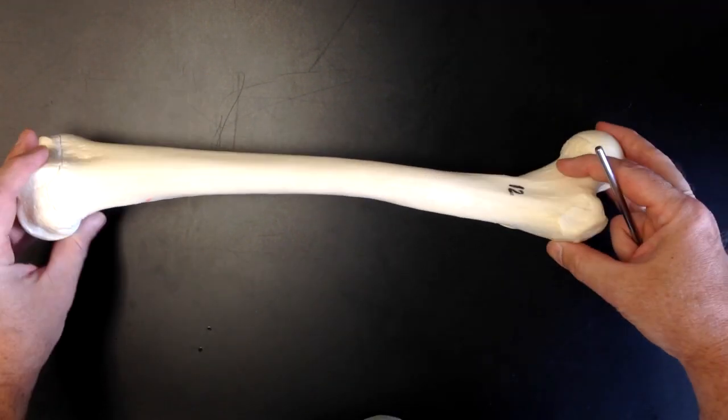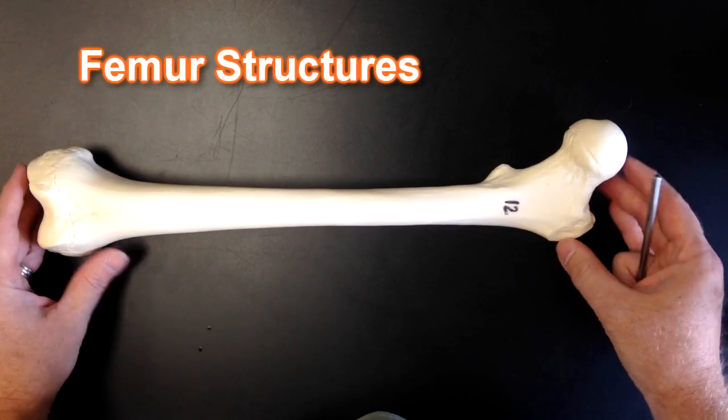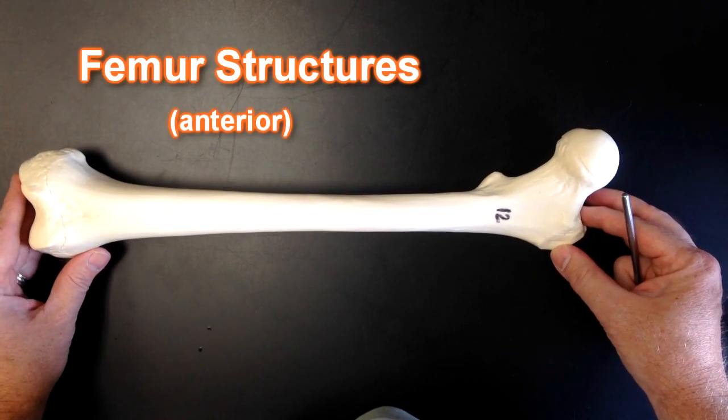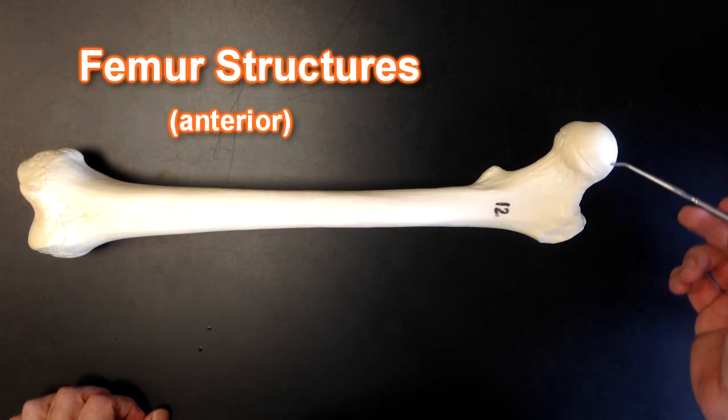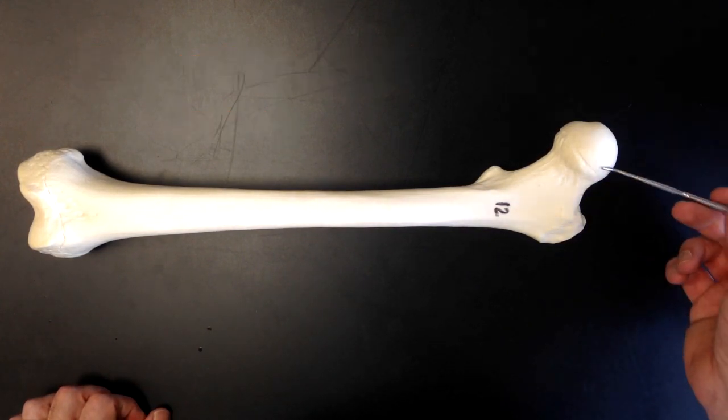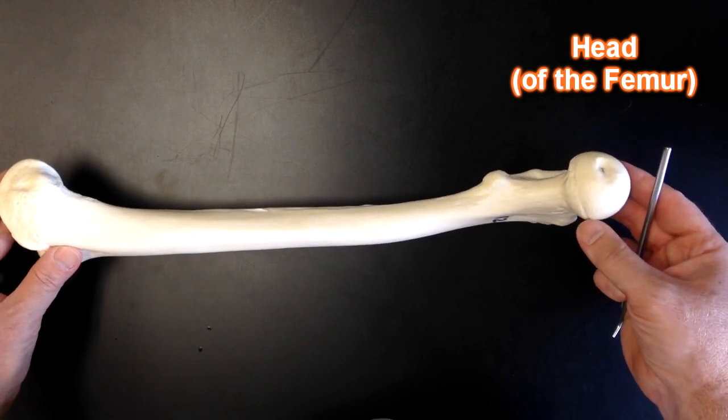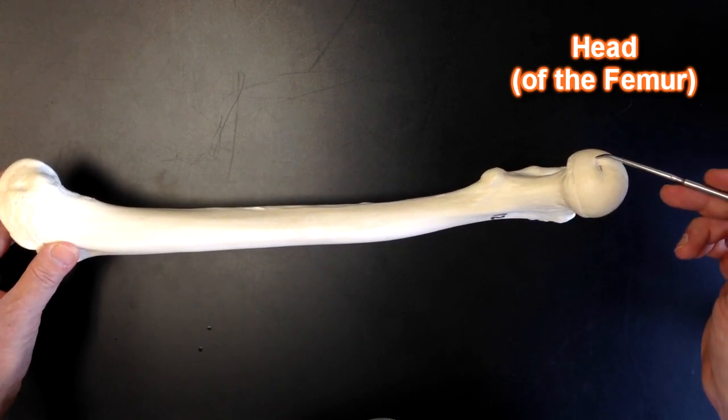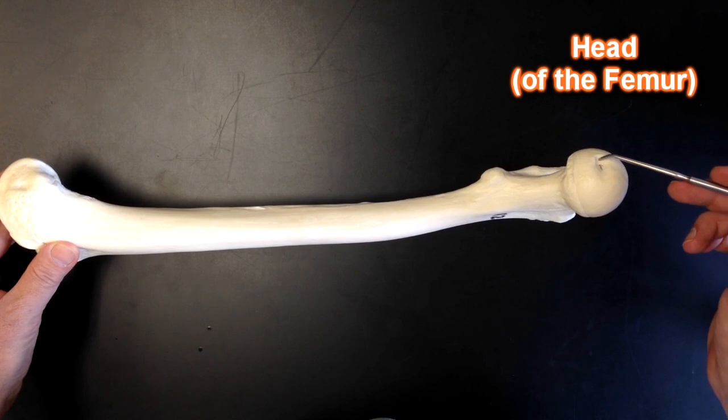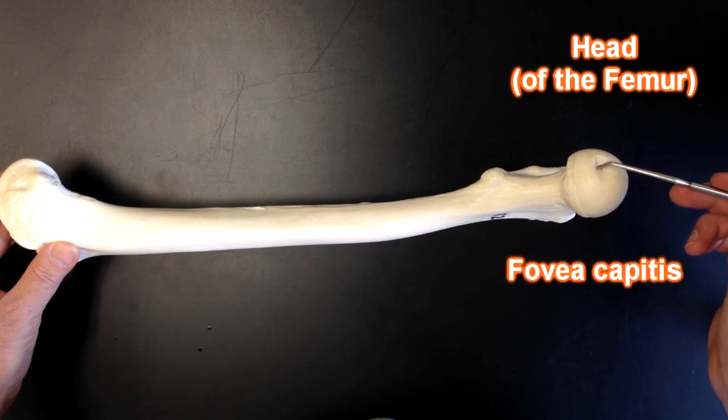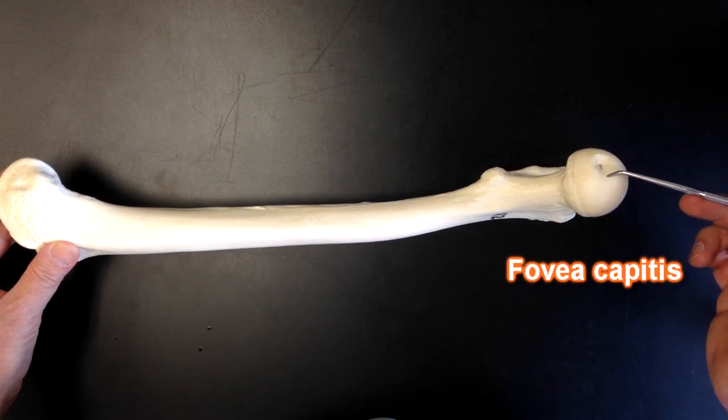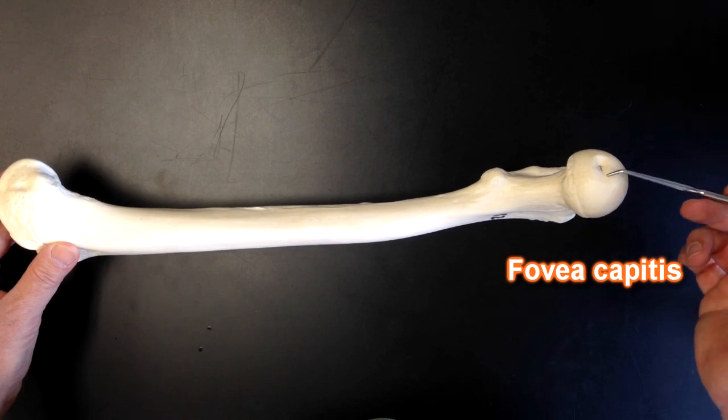Okay, so let's run through the structures again starting with the anterior view of the femur. This is the head of the femur and we can see that when we tilt it like this we can see the fovea capitis. The fovea capitis literally means pit in the head.